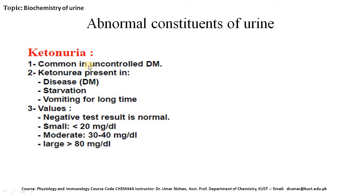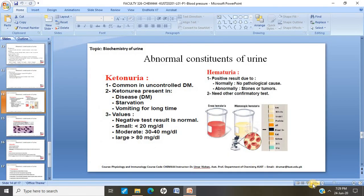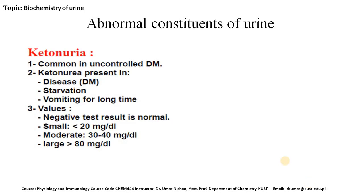Another situation that can result from abnormal constituents of urine is ketonuria. This situation is common in uncontrolled diabetes mellitus; ketonuria is present in diabetes mellitus, in case of starvation, or in case of prolonged vomiting. A negative test result is normal. A small amount is less than 20 mg per deciliter; a moderate situation is 30 to 40 mg per deciliter; while a large quantity is higher than 80 mg per deciliter.